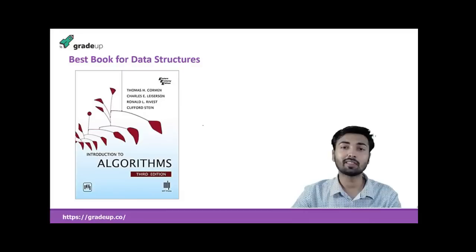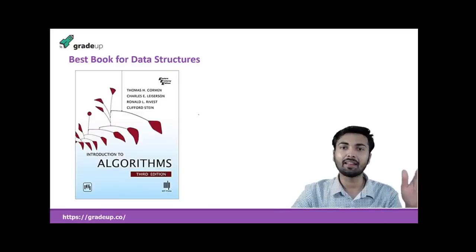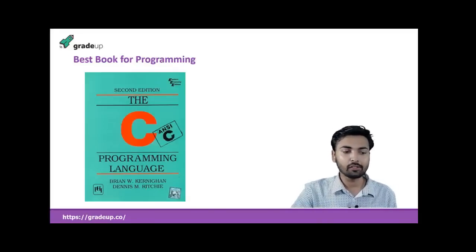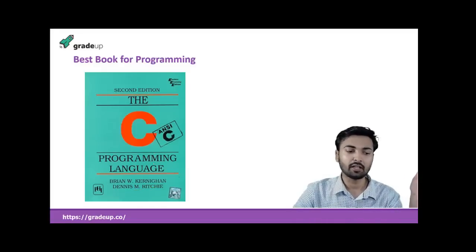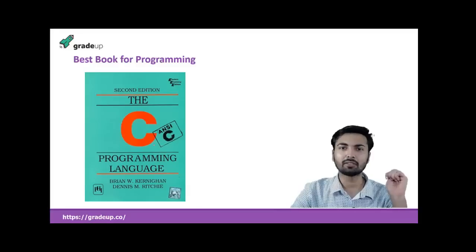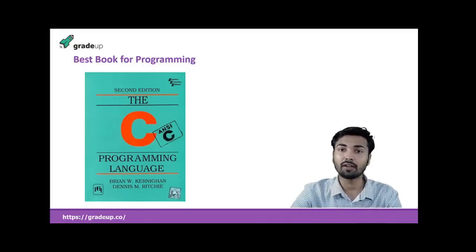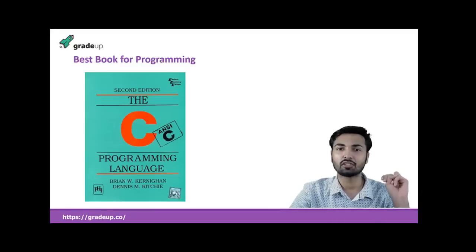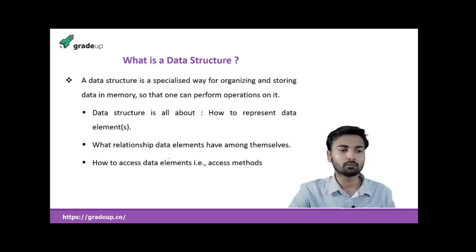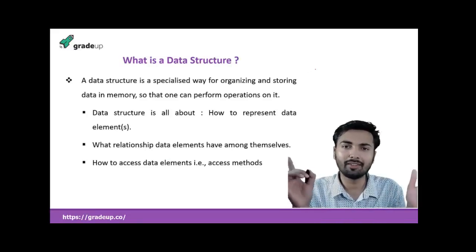Cormen covers arrays, linked lists, trees, and everything in data structures, but it doesn't include programming. For programming, you can refer to Dennis Ritchie, which is strictly according to the GATE standard. So the two major books are Cormen and Dennis Ritchie — refer to both for data structures and programming respectively.